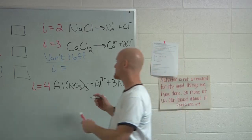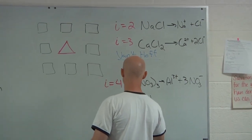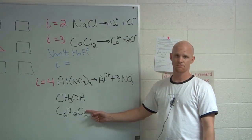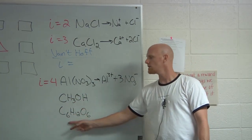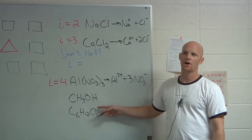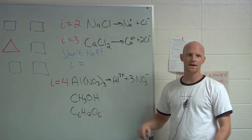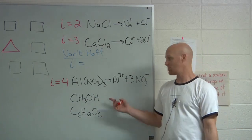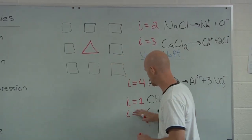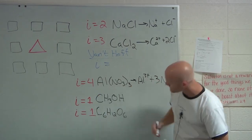Now we know what a Van't Hoff factor is. What about something like methanol or glucose? Notice they're all non-metals. Most molecular compounds — excepting the acids — are not electrolytes, which means they don't dissociate into any ions. So they'd have a Van't Hoff factor of just one. They don't break up into pieces. They can still dissolve into water if like dissolves like, but they won't actually dissociate into separate ions as non-electrolytes.